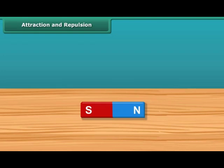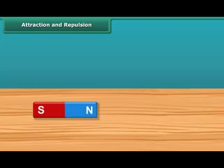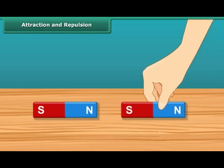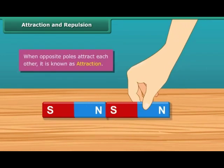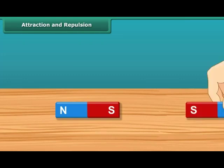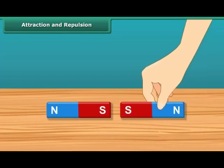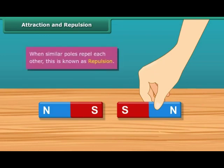Now let us look at the attraction and repulsion properties of magnets. When the south pole comes in contact with the north pole, they get attracted to each other — this is known as opposite poles attracting each other. When the south pole comes in contact with another south pole, they do not attract but repel each other — this is known as similar poles repelling each other.